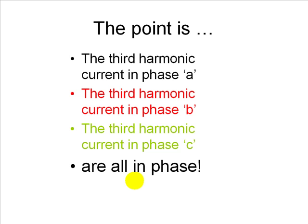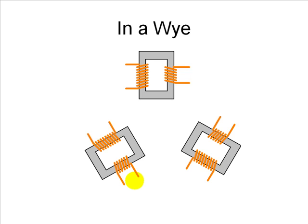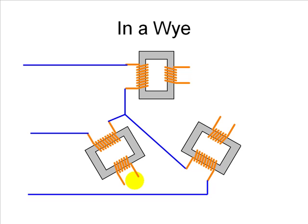Let's see what is the effect of that when connecting the three windings of a three-phase transformer. Consider three single-phase transformers which we are about to connect in the Y on the primary side, and we join the center of the Y to the center of the Y of the sources with a wire.